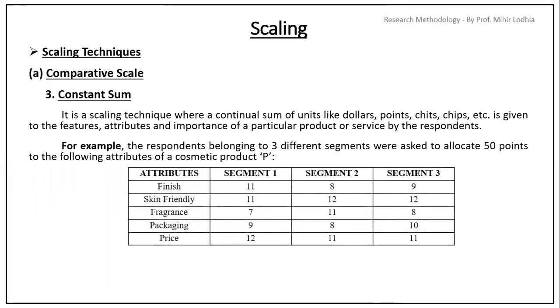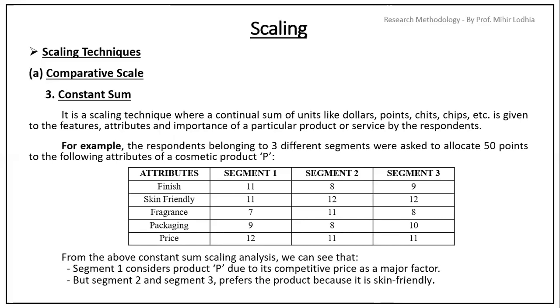So, these 50 points are given on segment 1, 2 and 3. These points are given on the basis of attributes like finishing, skin friendly, fragrance, packaging and price. From the above constant sum scaling analysis, we can see that segment 1 considers product P due to its competitive price. They have given 12 for price as a major factor. But segment 2 and 3, this segment of consumers prefer the product not because of price but because of the skin friendly attribute.